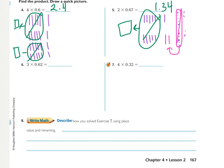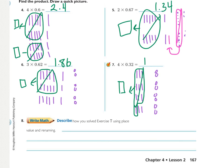Number six, three groups of sixty-two hundredths. Three groups of six tenths and two hundredths. Regrouping as needed, you should end up with one and eighty-six hundredths. And then seven is four groups of thirty-two hundredths, which should be one and twenty-eight hundredths.